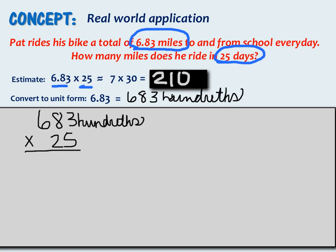When we used the area model it was easy to see the place value of each of our digits. But when we are using the standard algorithm you really have to think about the place value. Remember that this is 5 times 3, 5 times 80, and 5 times 600. Then we will do 20 times 3, 20 times 80, and 20 times 600.